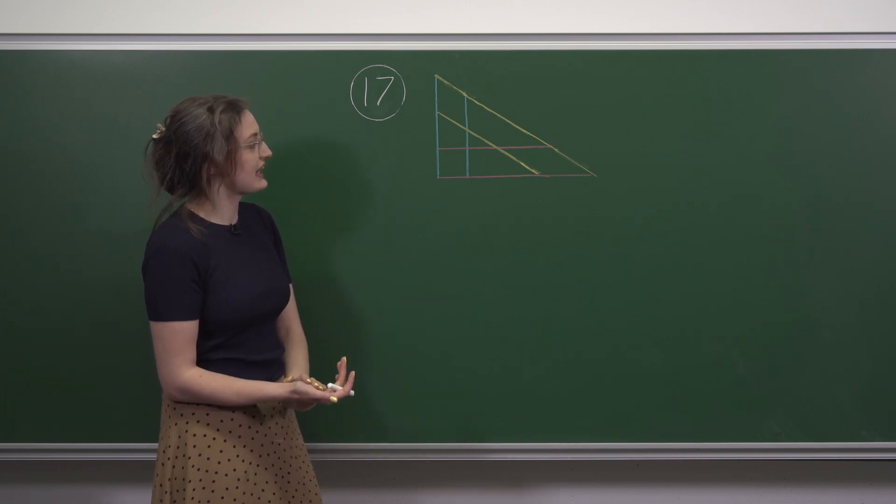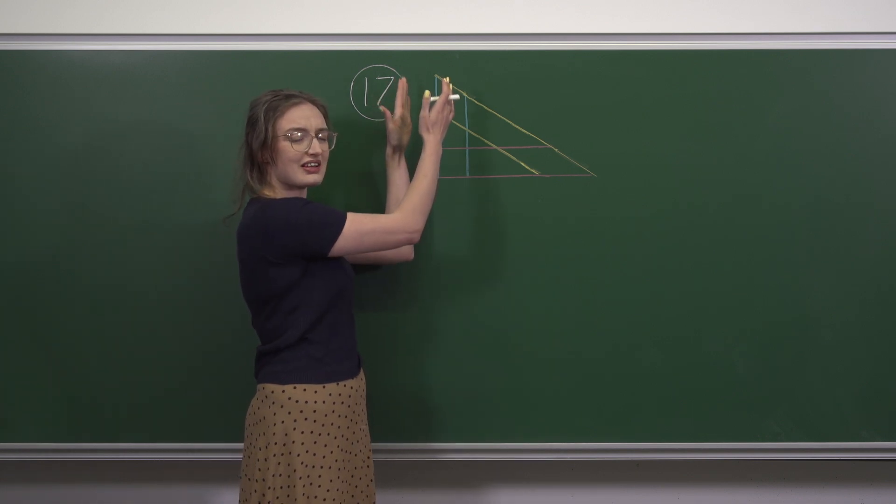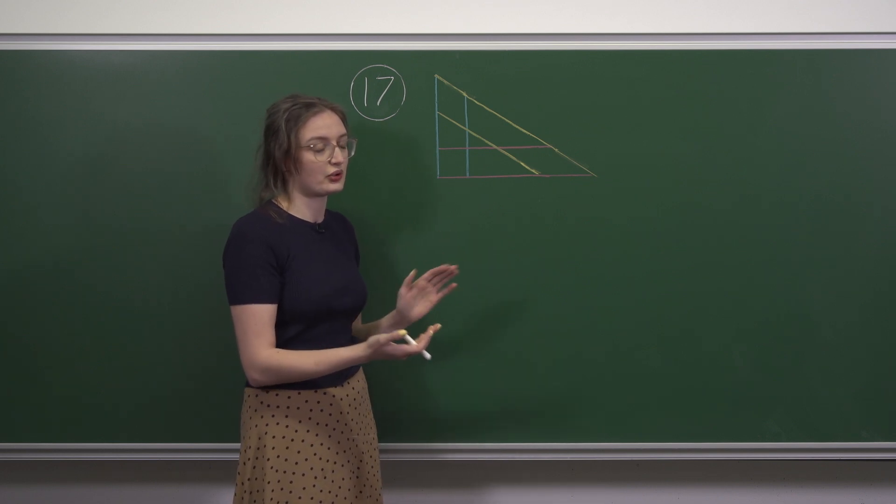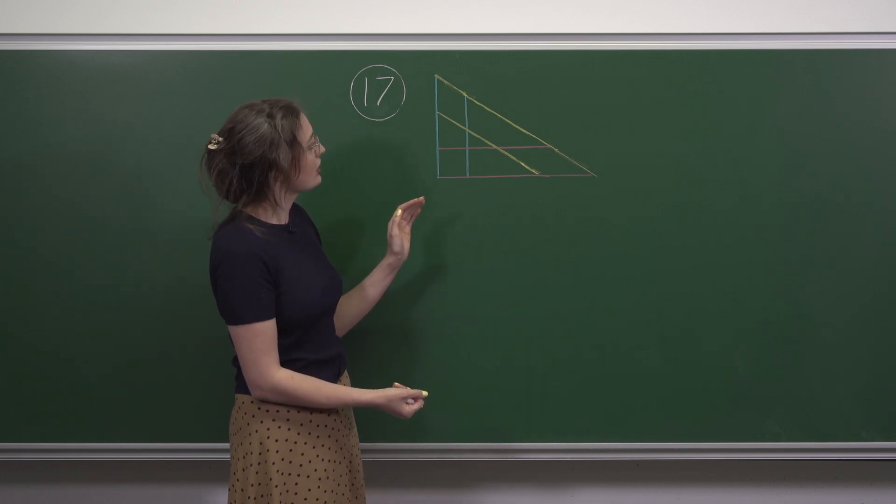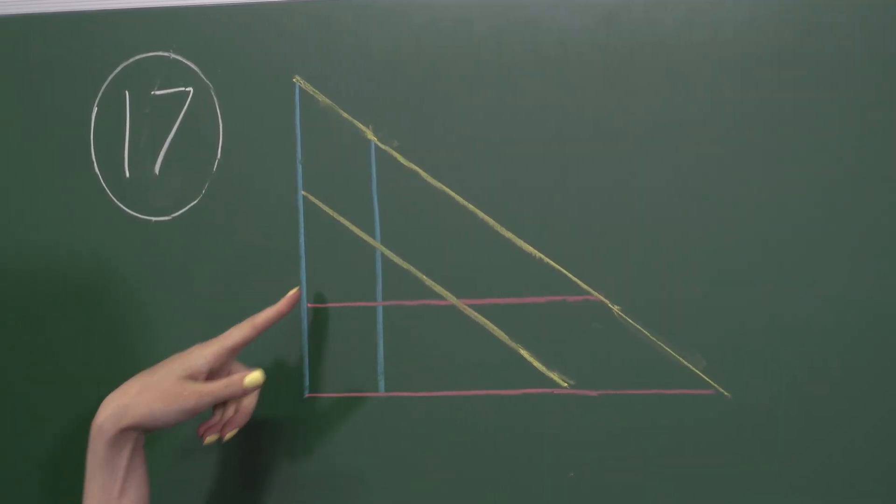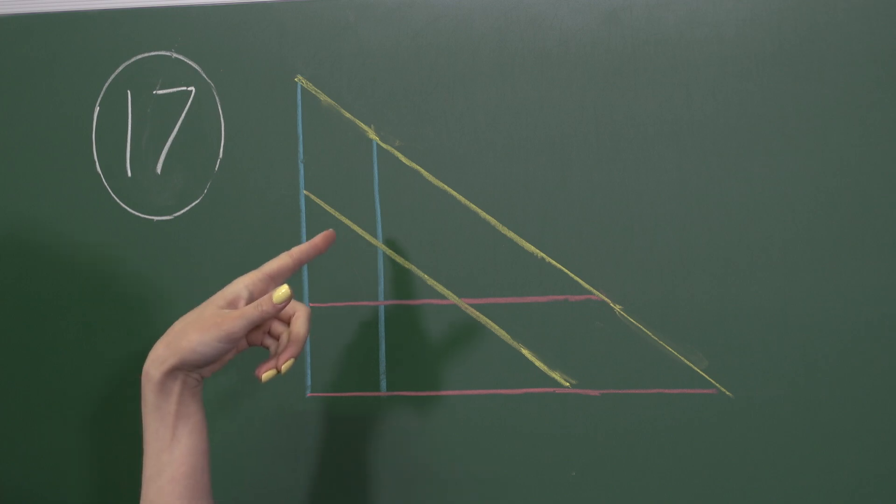The first thing to realize is that two parallel lines can't be in the same triangle because they never meet. They can't meet at a corner. So we have to pick only one of the blue lines, only one of the red lines, and only one of the yellow lines.